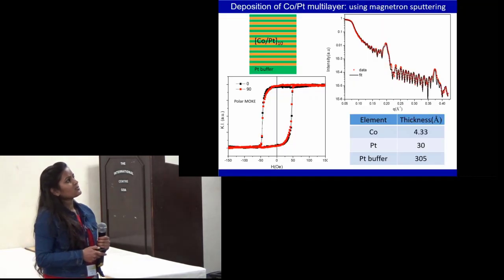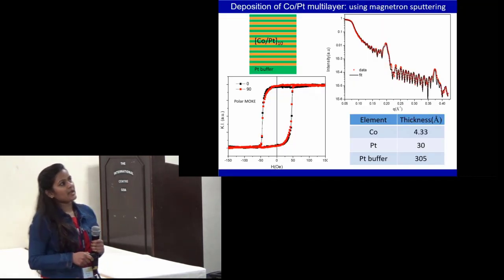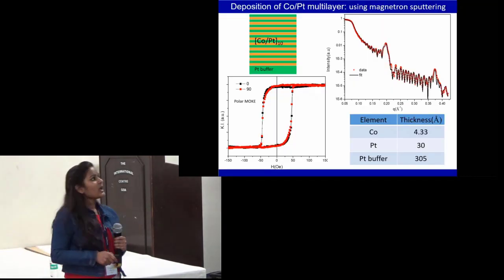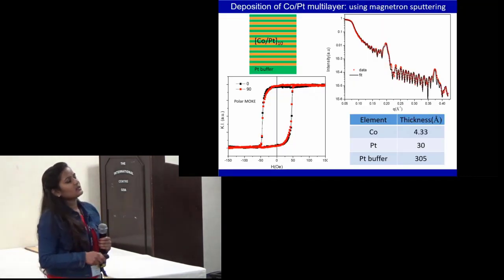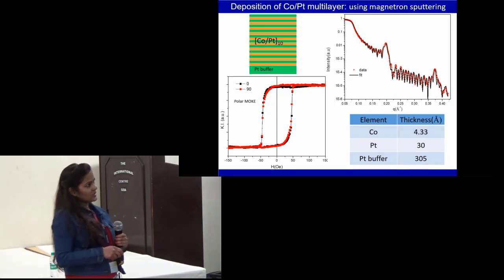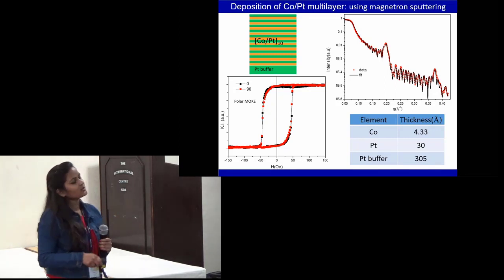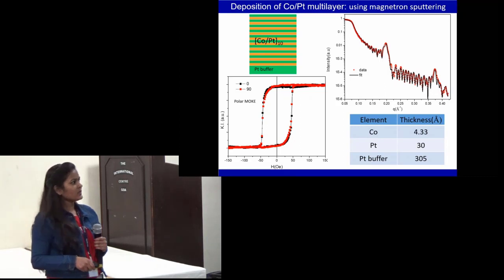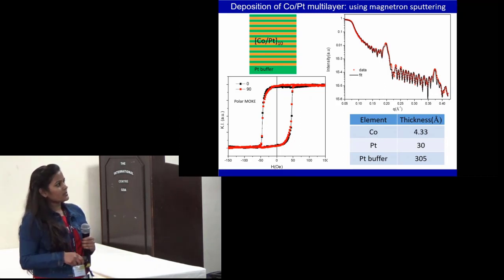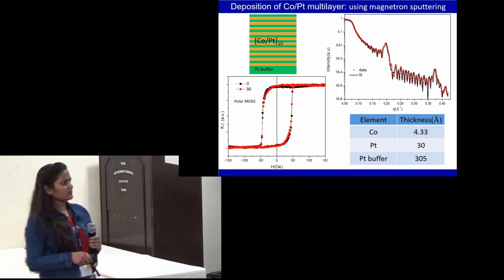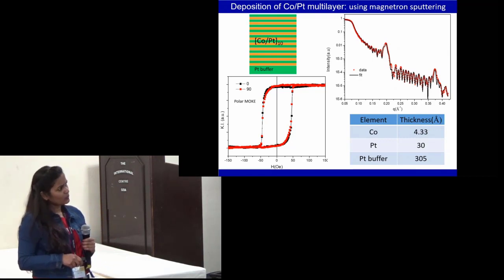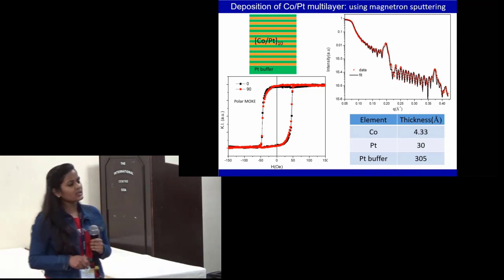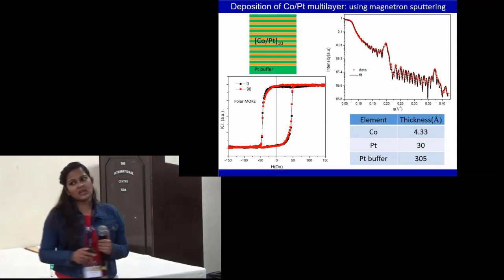We deposited a CoPt multilayer using magnetron sputtering. This is the reflectivity curve corresponding to this multilayer structure with this thickness and a platinum buffer layer of 305 Å. The MOKE in polar geometry shows an almost square hysteresis loop with very low coercivity, which confirms that the multilayer structure has very high perpendicular magnetization.